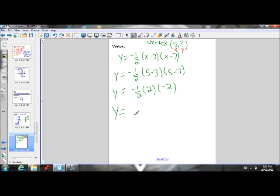We're going to need some more room here. Y is equal to negative 1 times 2 is negative 1. Negative 1 times negative 2, a negative times negative gives us a positive.